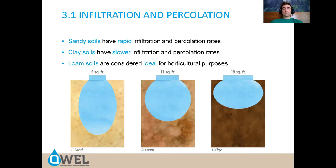Sandy soils have rapid infiltration and percolation rates. Clay soils have slow infiltration and percolation rates. A loam soil, which is a blend of different textures, is considered ideal because it will not lose water too quickly, but you can apply enough water to avoid runoff. Whatever soil texture you have, you can irrigate it properly — you just need to adjust your runtime so you don't have overwatering past the root zone or runoff.